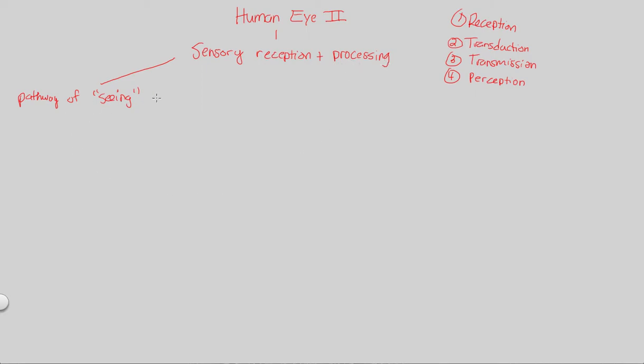Watch this pathway. As we go through it, be sure to figure out what steps are reception, transduction, transmission, and perception. If you want to brush up on these concepts, just look at the previous video. In order for us to see an image, we have to do step one. Step one is that light strikes the retina.